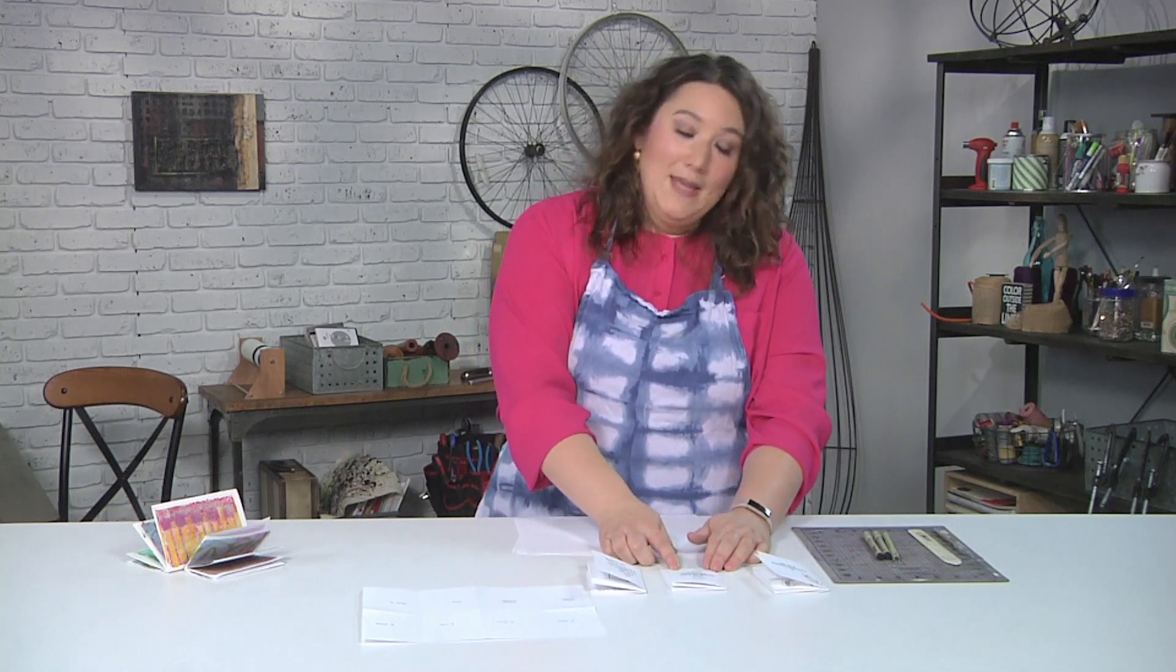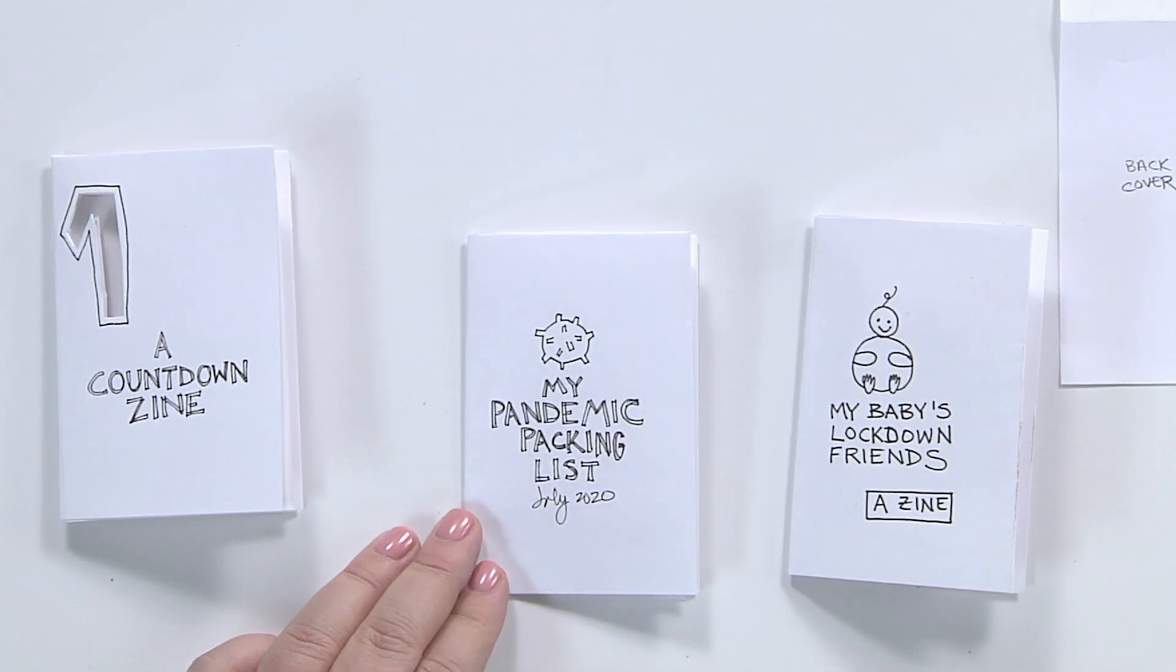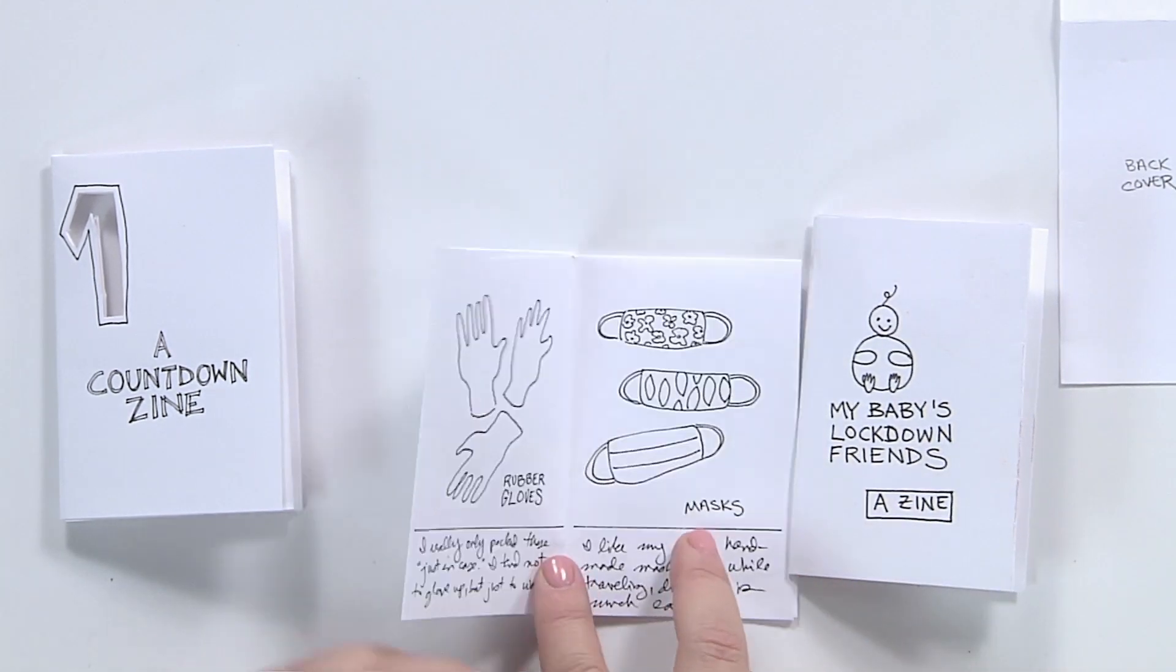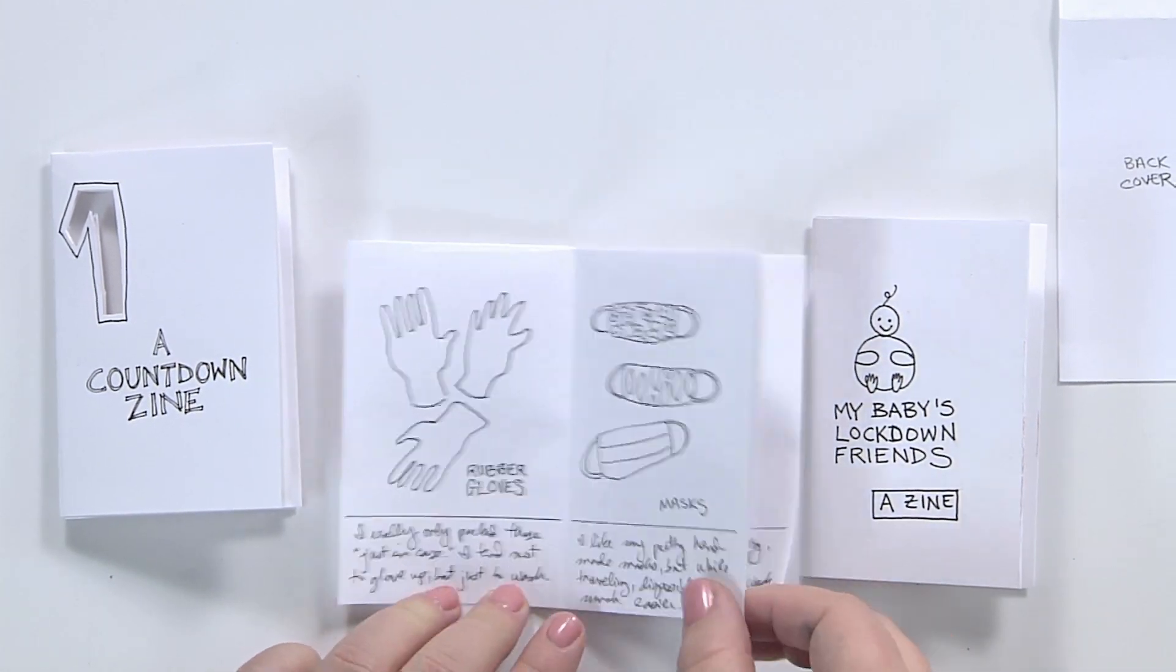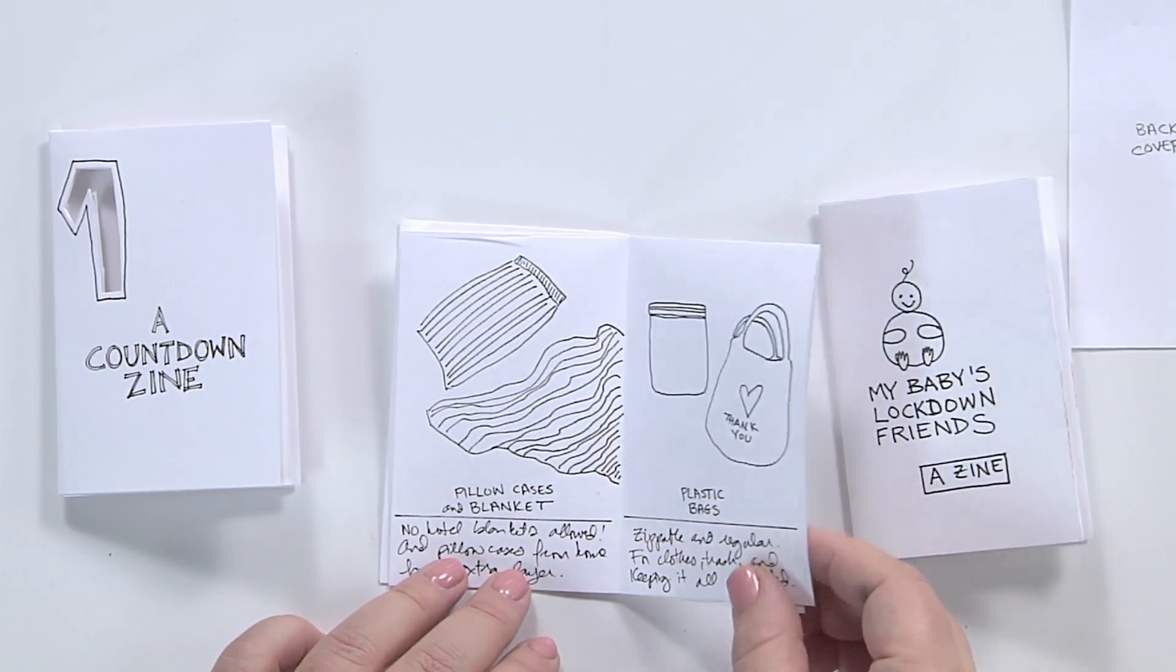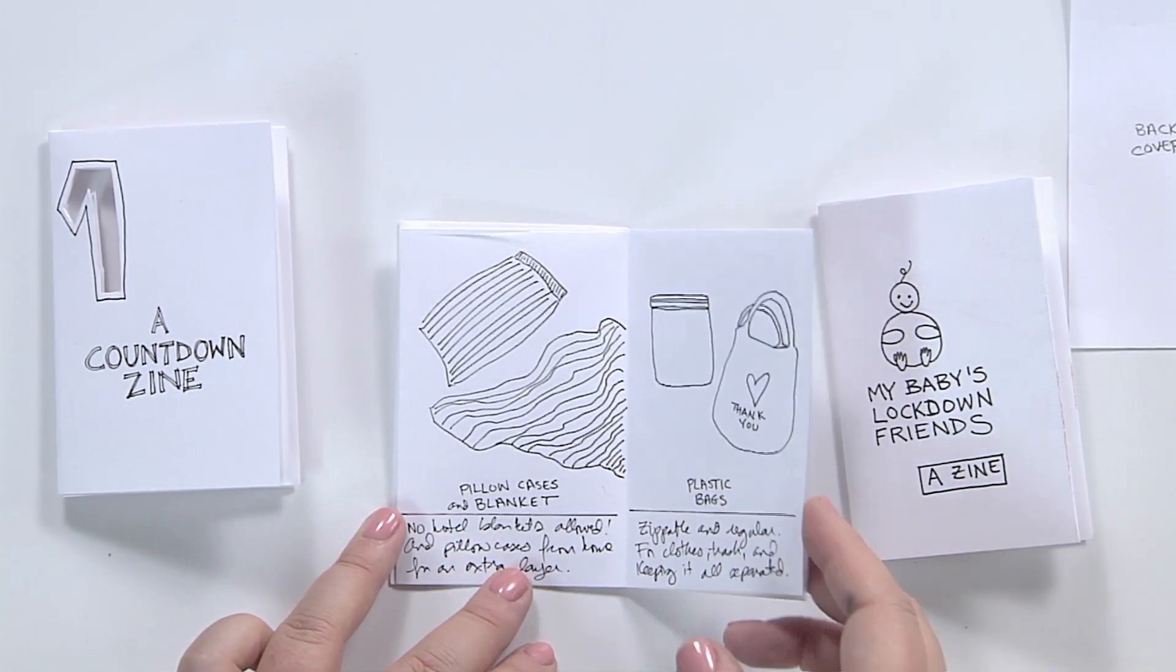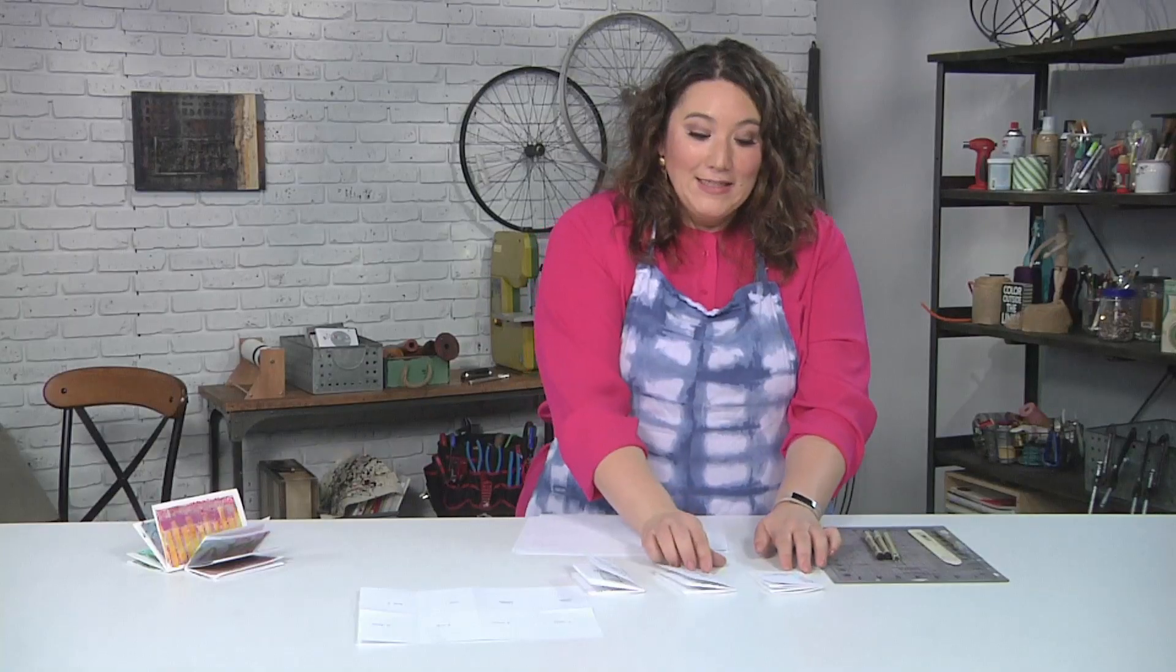Here's one that I made on my way coming here. I call it my pandemic packing list. What are the things that I needed to bring with me that I've never had to think about before? So rubber gloves, and I did some journaling about them, masks, alcohol wipes, hand sanitizer, a pillowcase and blanket and plastic bags, all those things that you might think of. And again, these are simple drawings that don't require a lot of work.